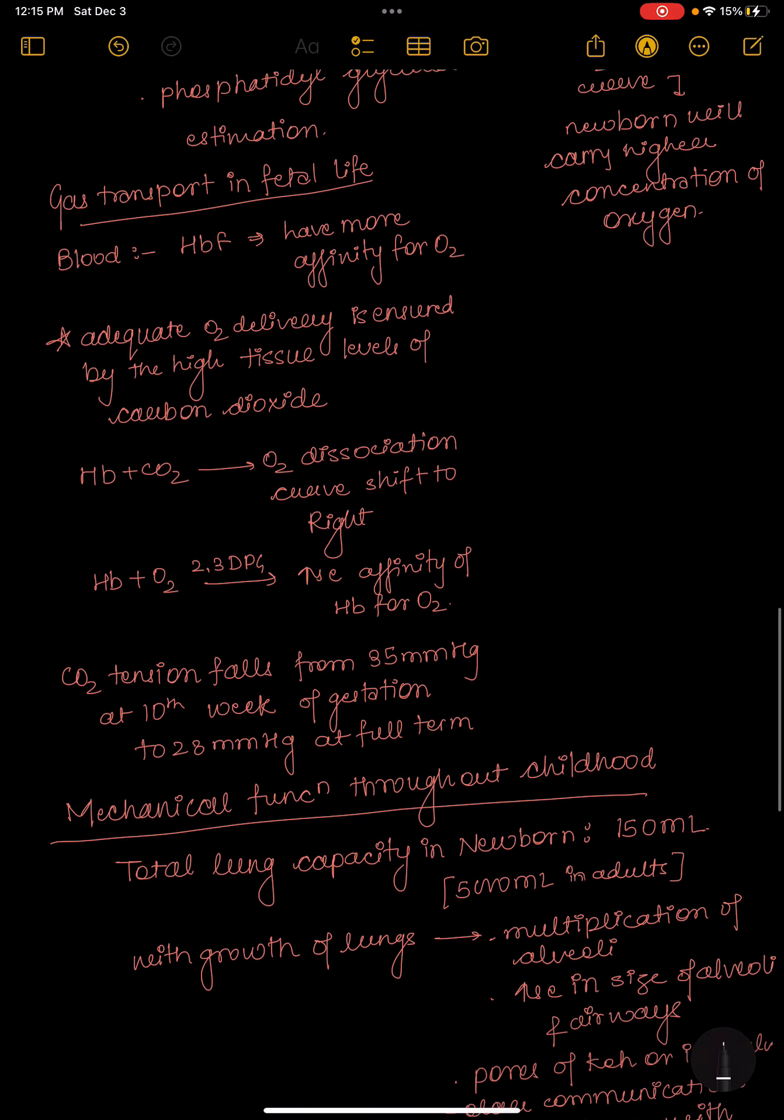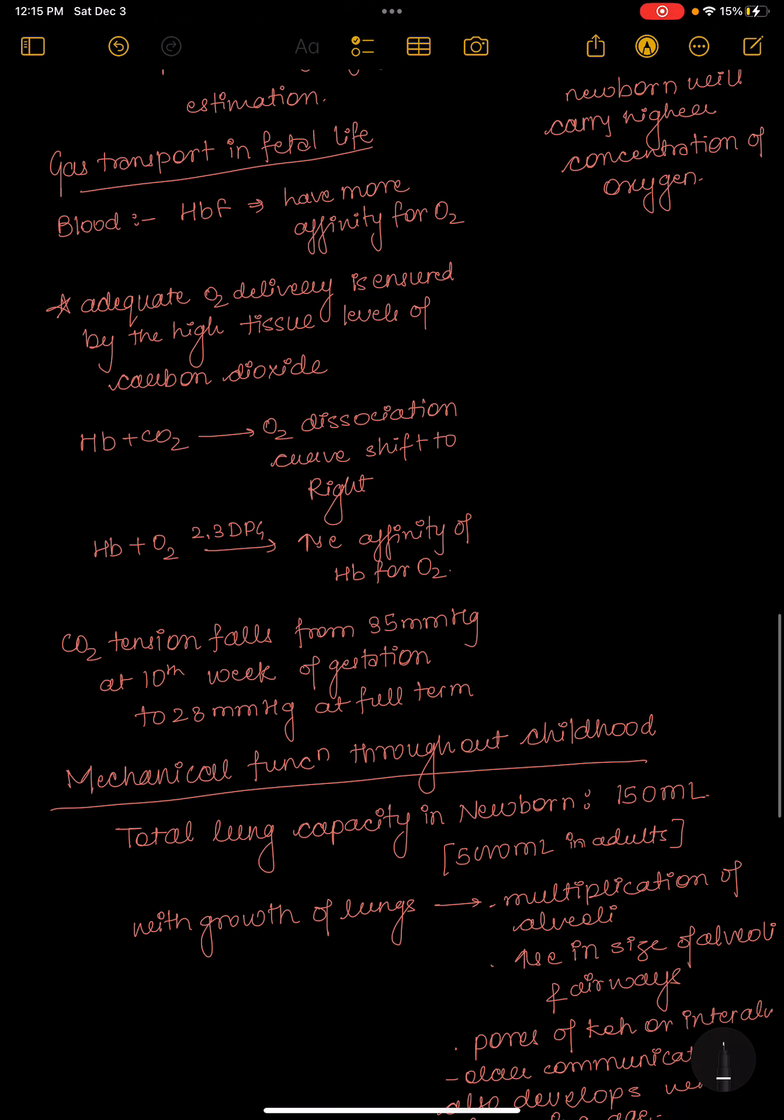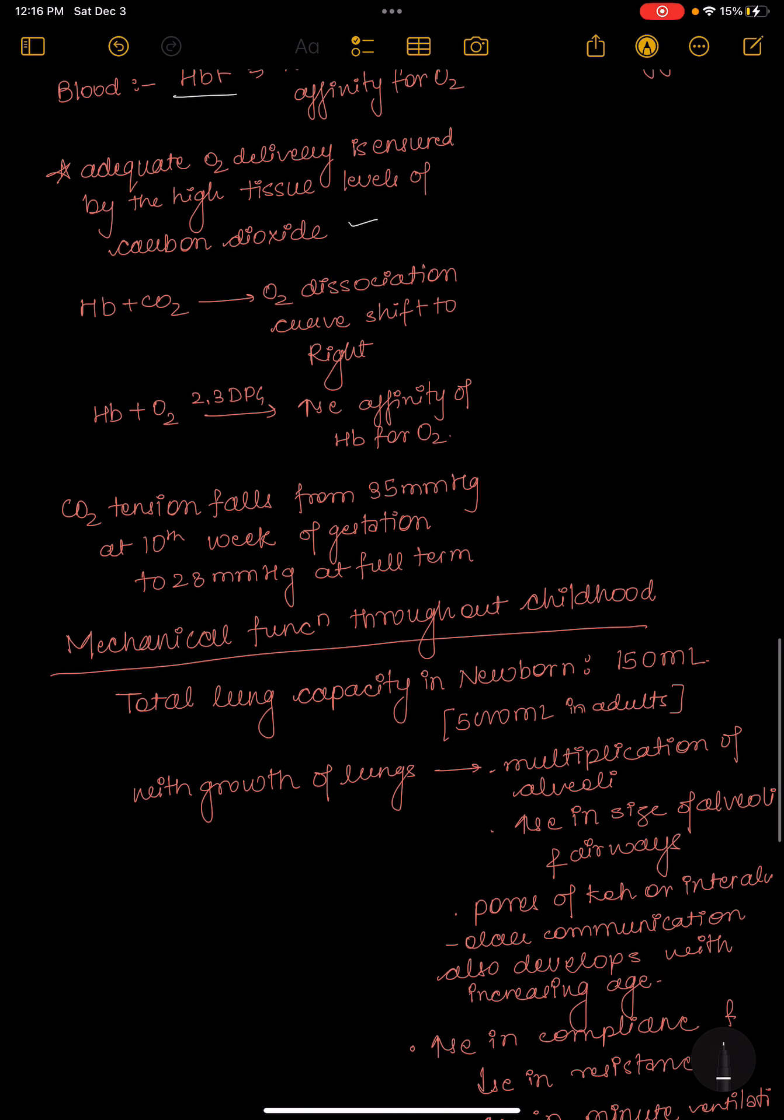We can do other tests also: nile blue sulfatase test and phosphatidyl glycerol estimation. Now we study gas transport in fetal life. In fetal life, the hemoglobin present is fetal hemoglobin, which has more affinity for oxygen. Adequate oxygen delivery is ensured by high tissue levels of carbon dioxide. When CO2 combines with hemoglobin, the oxygen dissociation curve shifts to right. When hemoglobin combines with oxygen in the presence of 2,3-DPG, there is increased affinity of hemoglobin for oxygen.